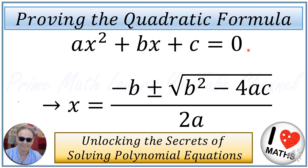then x will be equal to minus b, plus or minus the square root of b squared minus 4ac, all over 2a. And we are going to prove this formula.